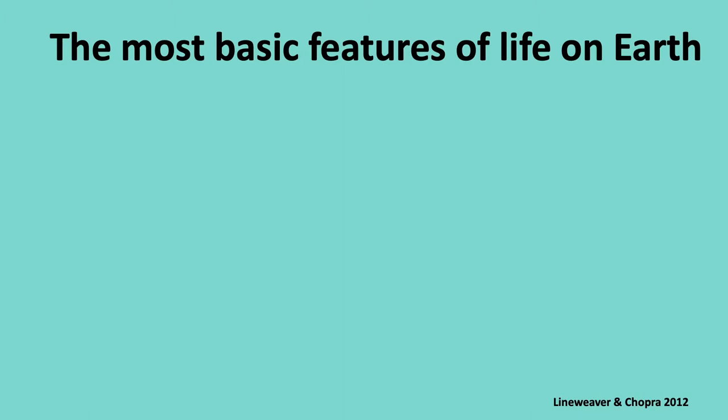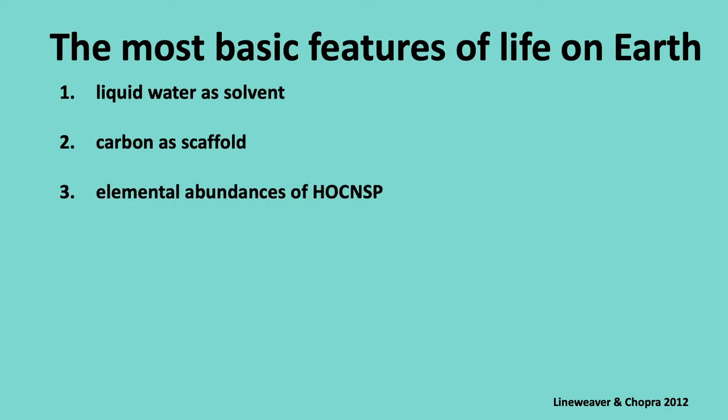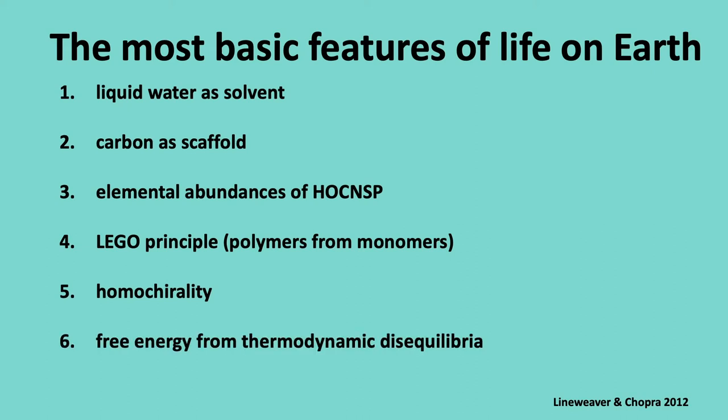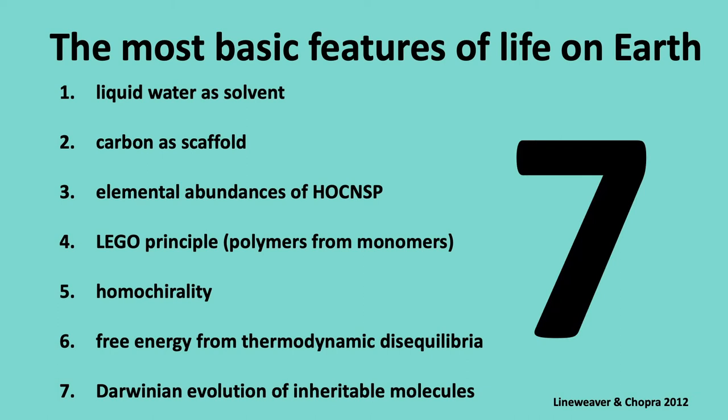Now, what are the most basic features of life on Earth? Because those are the ones we're going to use to extend and understand what LUCA was doing. Well, here's a list that we published in 2012. Liquid water as a solvent. Carbon as a scaffold. Elemental abundances of H, O, C, N, S, P. These are the six most abundant elements in life. And then there's the Lego principle, where you make polymers out of monomers. Then there's homochirality. Free energy from thermodynamic equilibrium. All life needs some type of energy. And Darwinian evolution of inheritable molecules. So let's talk about these. Now, there are seven of them. That's kind of an arbitrary number, but let's go with it.